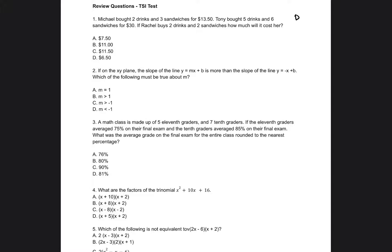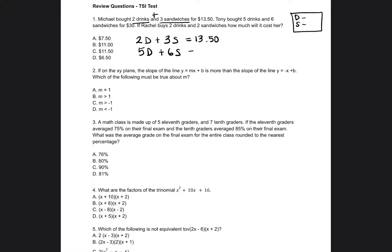We're talking about drinks and sandwiches. I like to make a little box in the corner just to represent the information I'm trying to find — D for drinks, S for sandwiches. Michael bought two drinks and three sandwiches, so I'll write 2D plus 3S equals $13.50. Tony bought five drinks and six sandwiches, so five drinks plus six sandwiches, and his total was $30. So I have two equations, each with two variables.